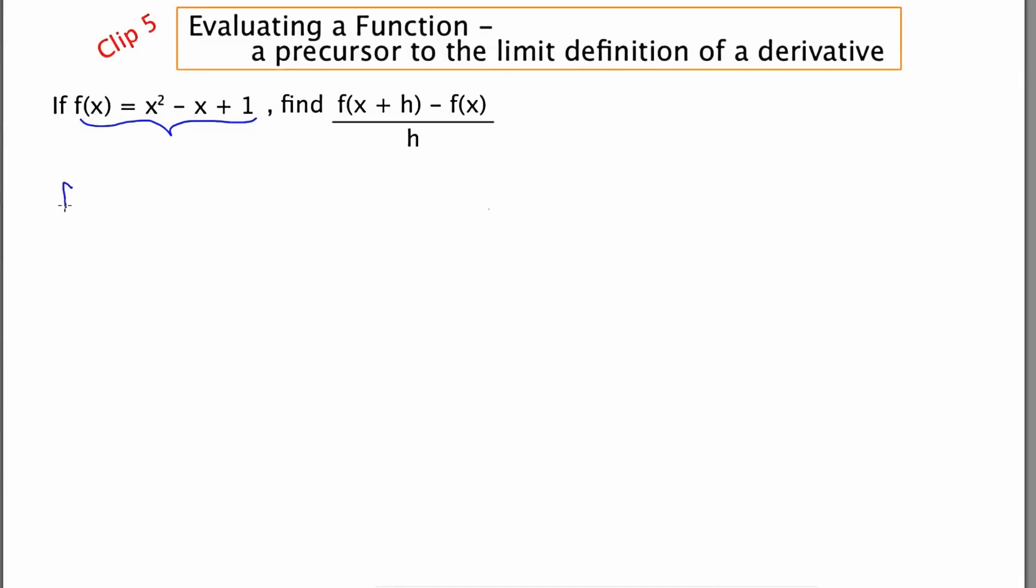So let's start with that. f of x plus h is going to be the old x that we saw up above squared minus the old x plus 1. So wherever there had been an x, I'm going to replace that with x plus h.